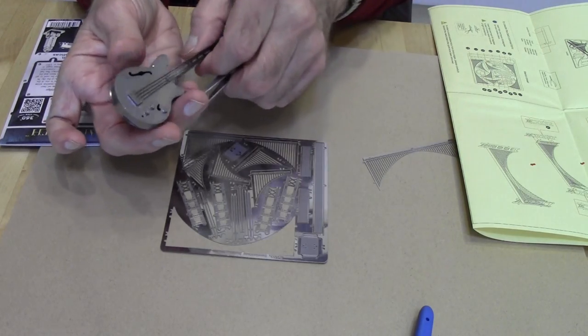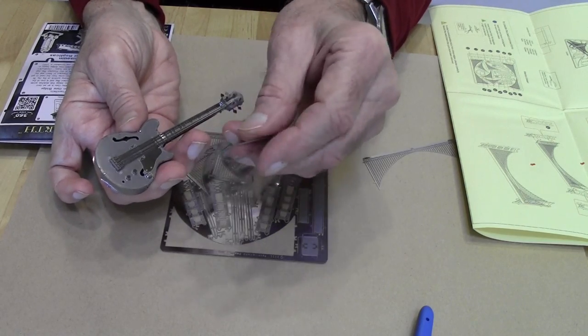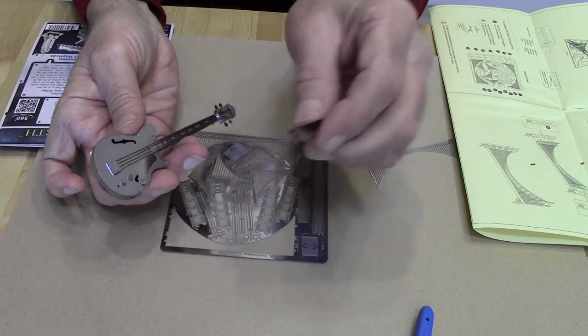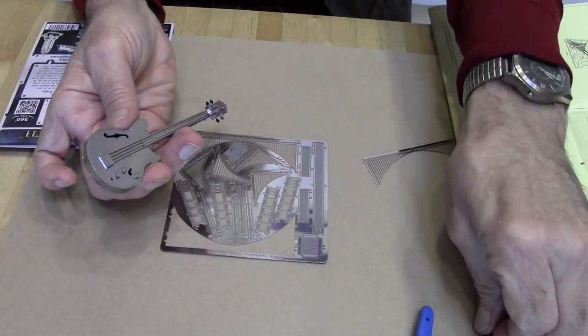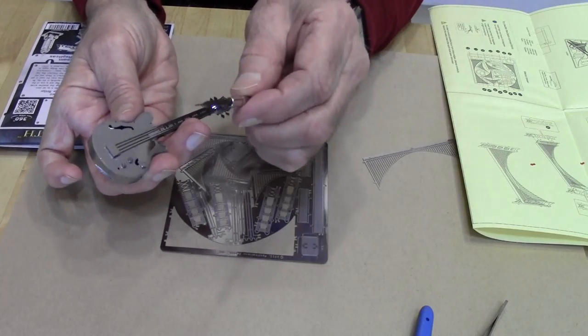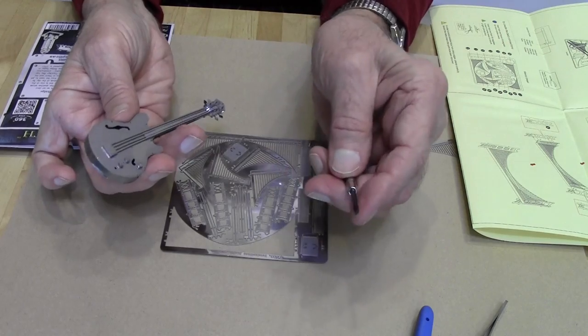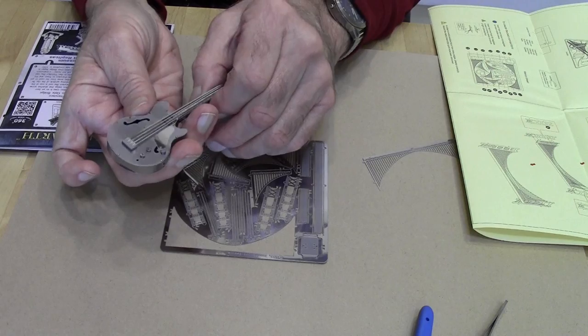If you have a tab that's going to show, they suggest that you bend it over and then flatten it out. To do that, I have to do it in two steps. I get the tab started because I can't get the tweezers to complete it, and then I take the flat head screwdriver and I just push it down flat. Works for me.